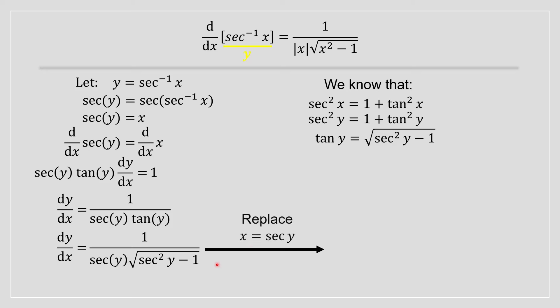The last step is to replace secant y with x. This comes from our earlier equation, and this is the reason why the derivative of arc secant of x is equal to what it's equal to.